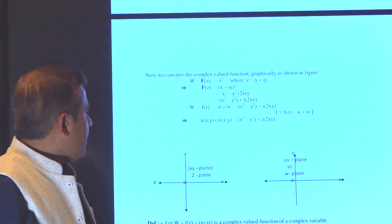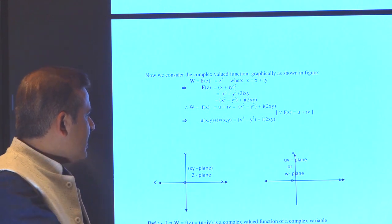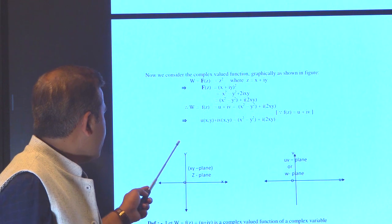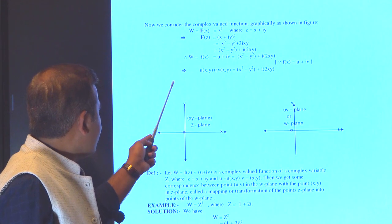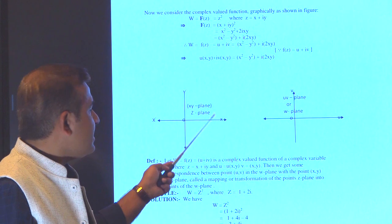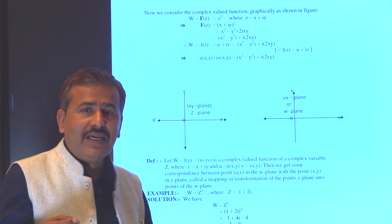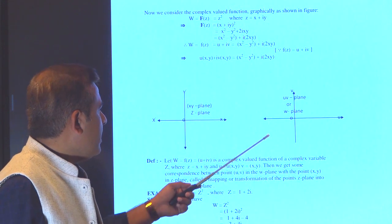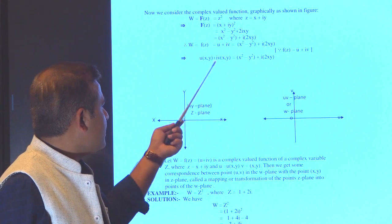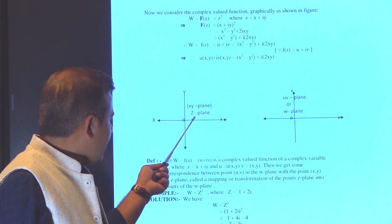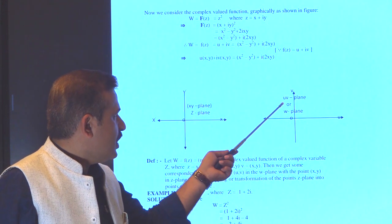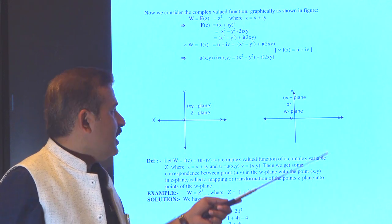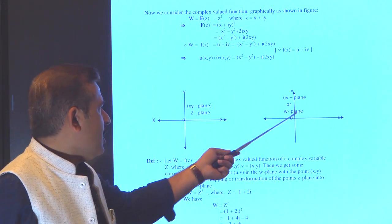The complex function is expressed in the form x² − y² + i(2xy). This is the z plane — the z plane means it is the xy plane. The uv representation is denoted as the w plane, meaning the uv plane is the w plane.